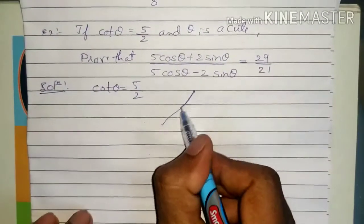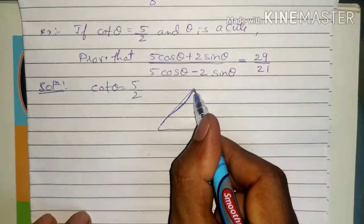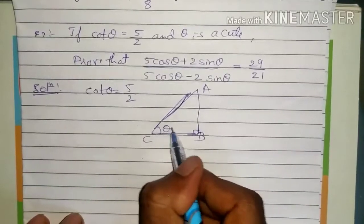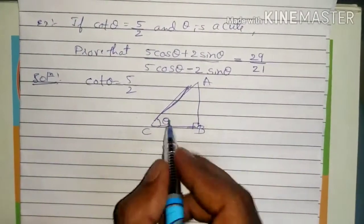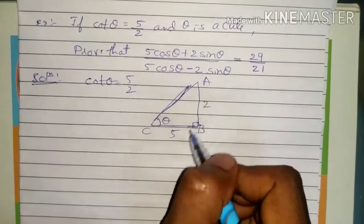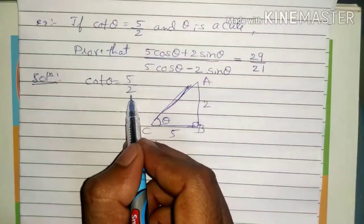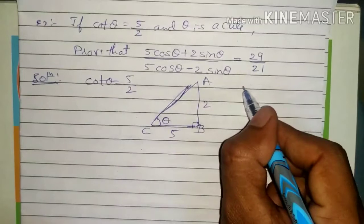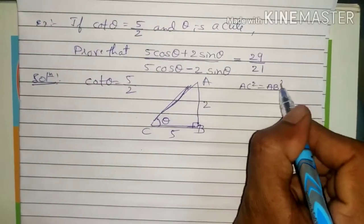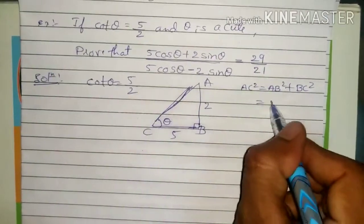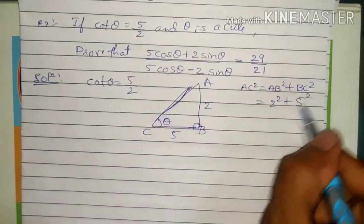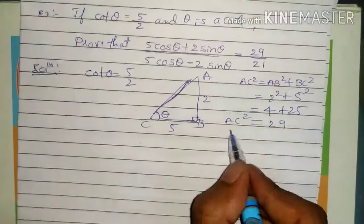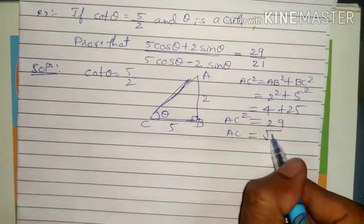Draw a right angle triangle ABC, and if this angle is theta, the definition of cot theta is adjacent by opposite, so adjacent is 5 and opposite is 2. Using Pythagoras theorem: AC squared equals AB squared plus BC squared, so AC squared equals 2 squared plus 5 squared, which is 4 plus 25 equals 29. Therefore AC equals root 29.